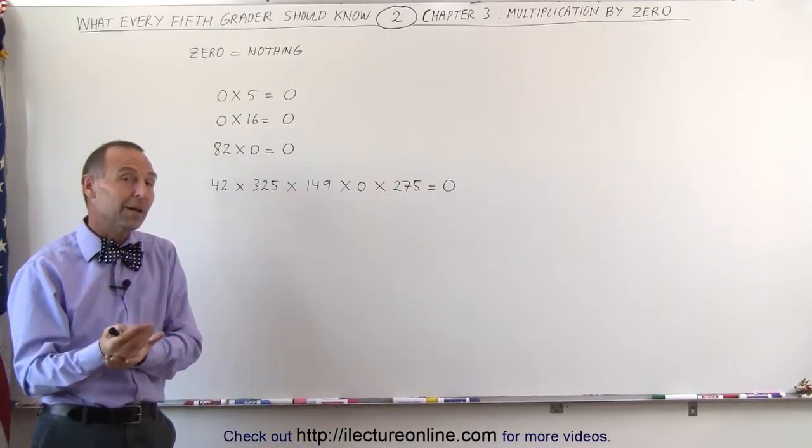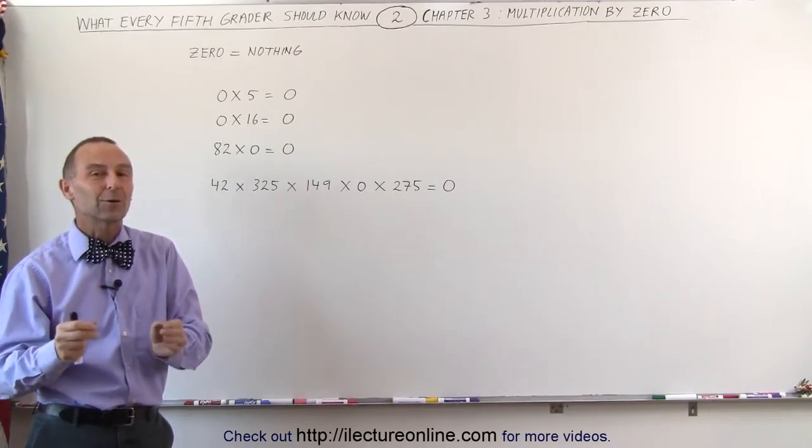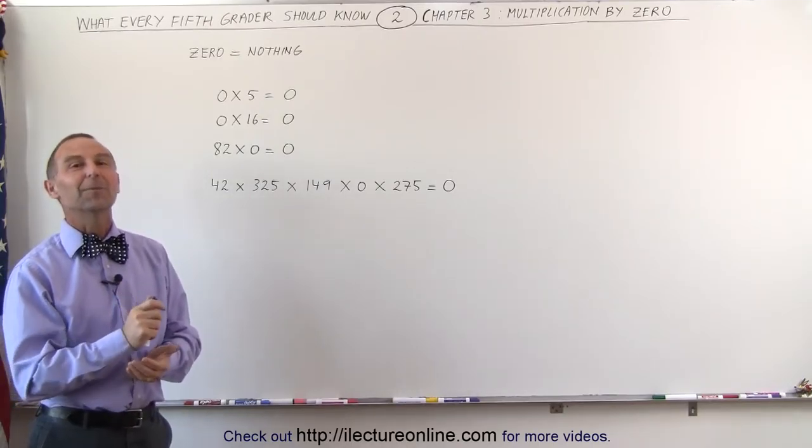So, in short, when you multiply by zero, you always get zero no matter what. And that's the rule of multiplying by zero.